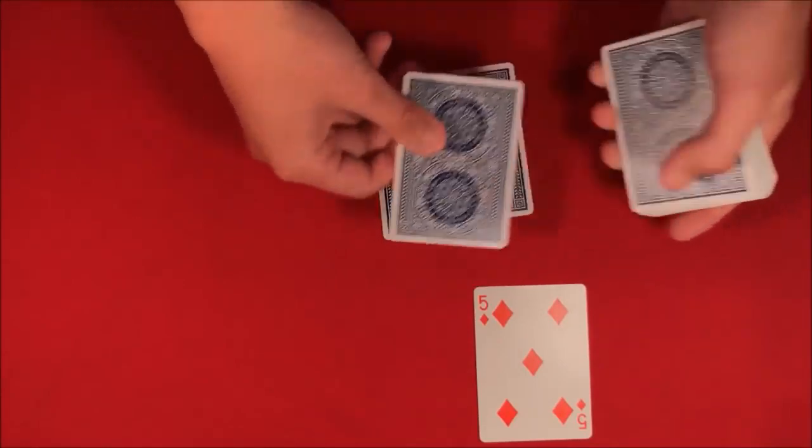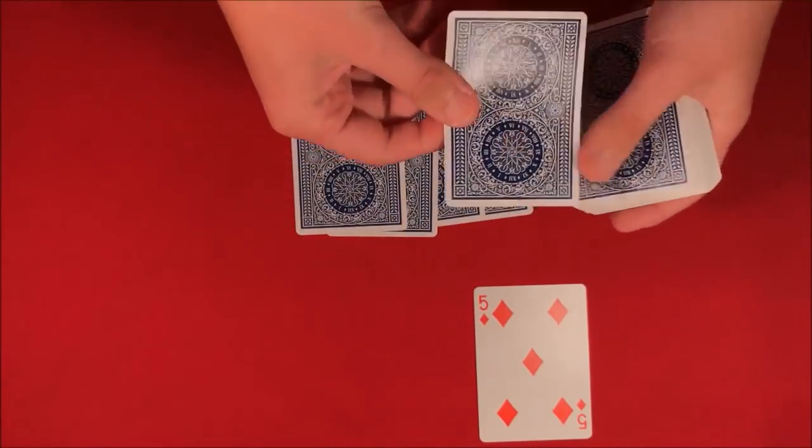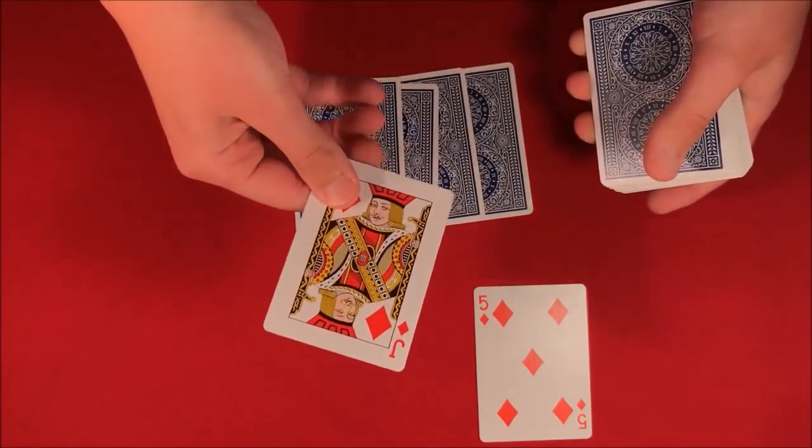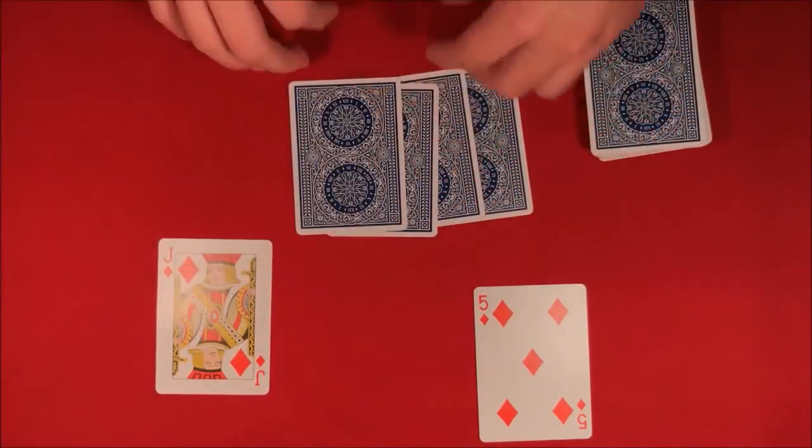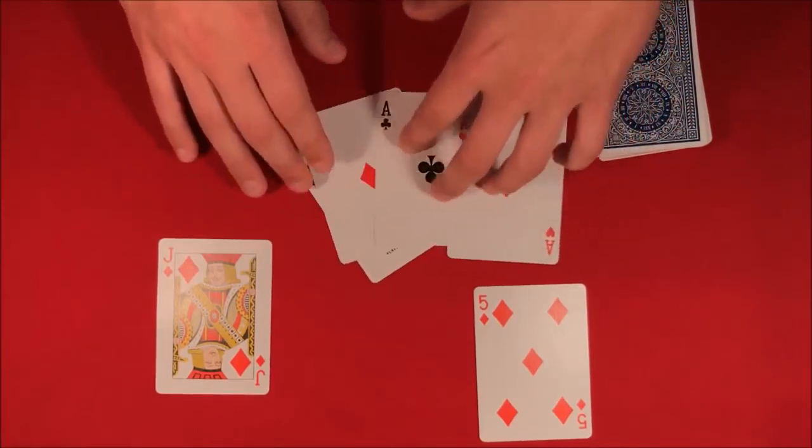So you take one, two, three, four, and the fifth card here is going to be the spectator's card. And not only is their card going to be five cards down, but the four cards in between also happen to be the four aces.